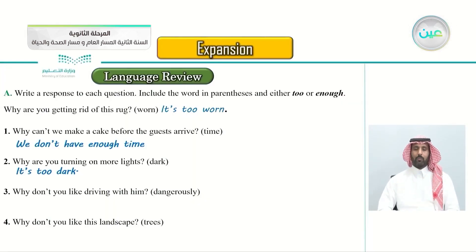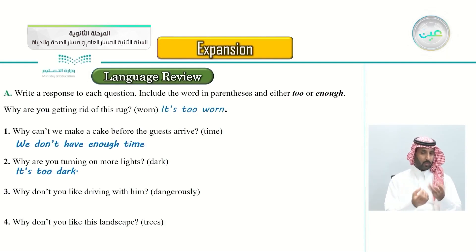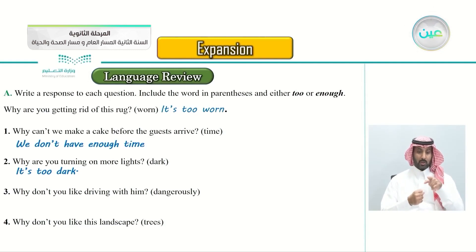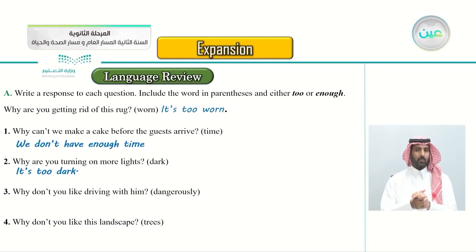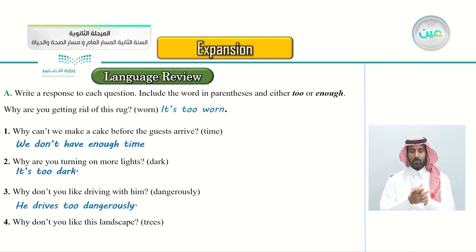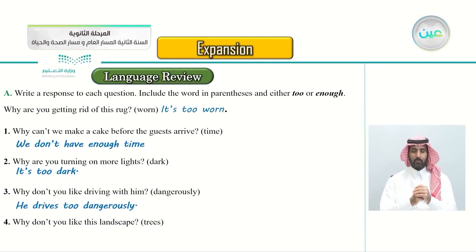Number three: why don't you like driving with him? The adverb is 'dangerously'. Which one do we choose — 'too' or 'enough'? The answer is: because he drives too dangerously. I don't like riding with him because he drives too dangerously — too recklessly, too carelessly, and so on.